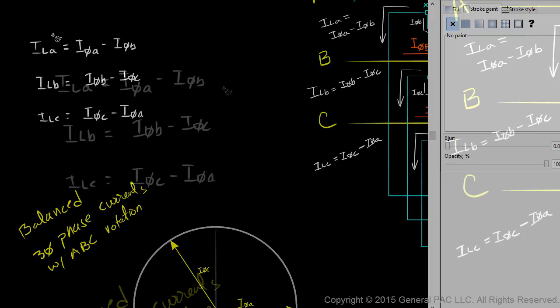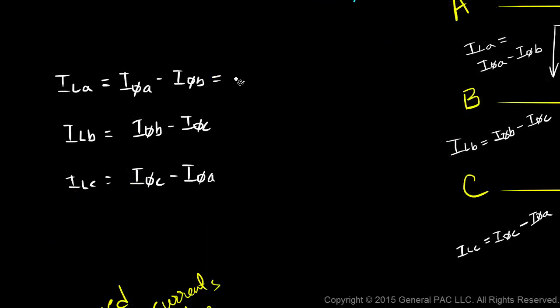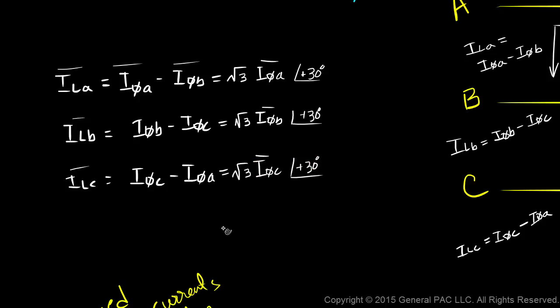Okay, so let's evaluate the first one. ILA is essentially equal to the square root of 3 times I phase a, rotated by 30 degrees. Plus 30 degrees in the counter-clockwise direction. So these are all vectors. Similarly, line current b is equal to the square root of 3 times the phase current b, rotated in the plus 30 degrees counter-clockwise direction. And ILC, or the line current c, is equal to the square root of 3 times the phase c current, rotated 30 degrees in the counter-clockwise direction.